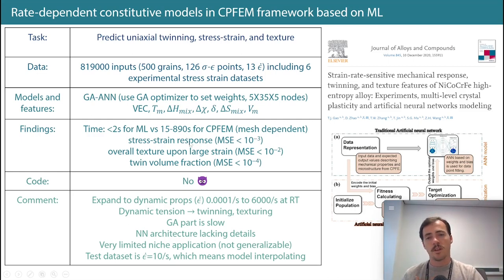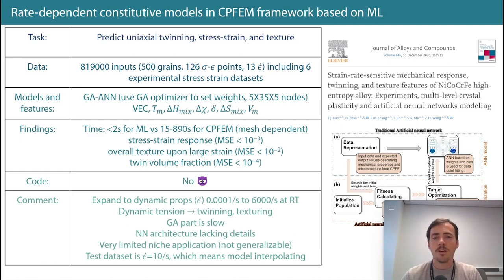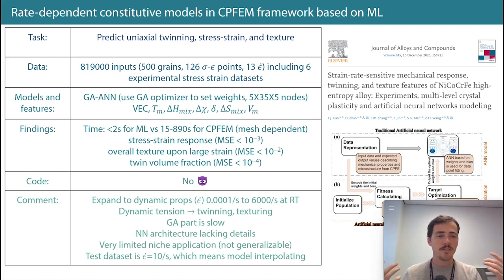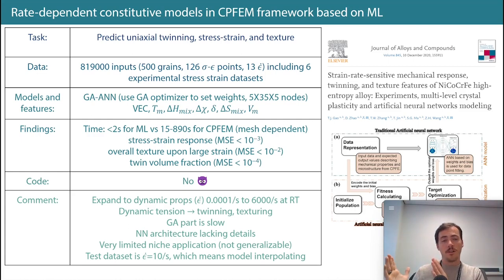The actual performance values they report for stress-strain and texture and twin volume are negligibly small mean squared errors — which always looks too good to be true. And sure enough, they don't provide code or data. Looking into it, I realized their 'test set' was just one of the 13 strain rates held out: ε̇ = 10 per second. They trained on all the very slow strain rates and all the very fast strain rates, then predicted a single rate right in the middle. That is a very tight interpolation.